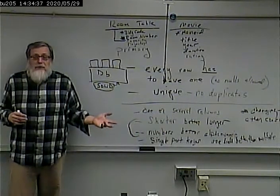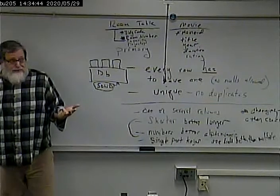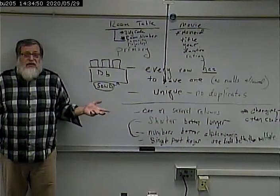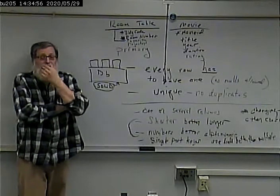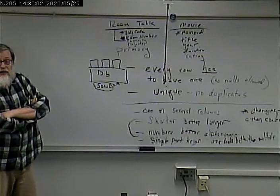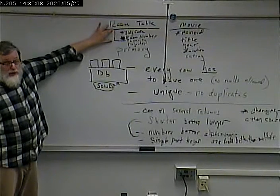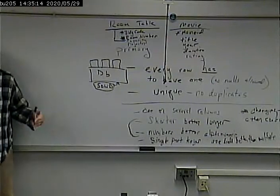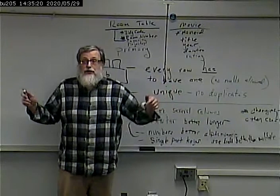What makes this a surrogate key is the fact that outside the database it doesn't really mean anything. That's different from what are called natural keys. A natural key is where outside the database it's still meaningful. For example, outside of the database, people know this room as BU 205 — those numbers mean something: BU means the BU building, 205 means it's somewhere on the second floor.